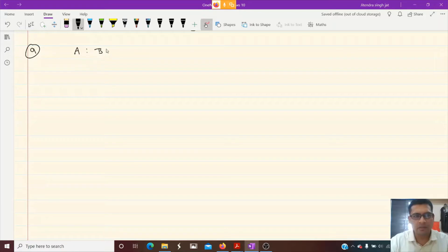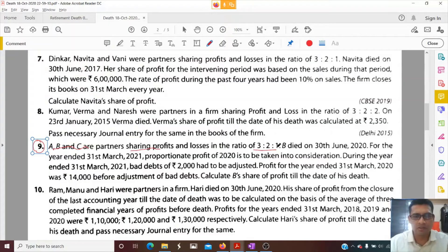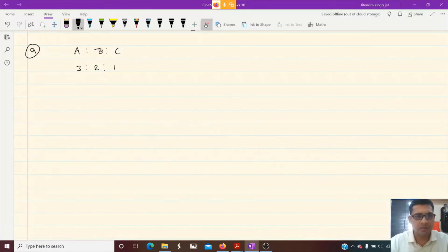Q9: A, B and C are partners, sharing profits and losses in the ratio of 3 to 2 to 1. B died on 30th June 2020, so after 3 months, B died.